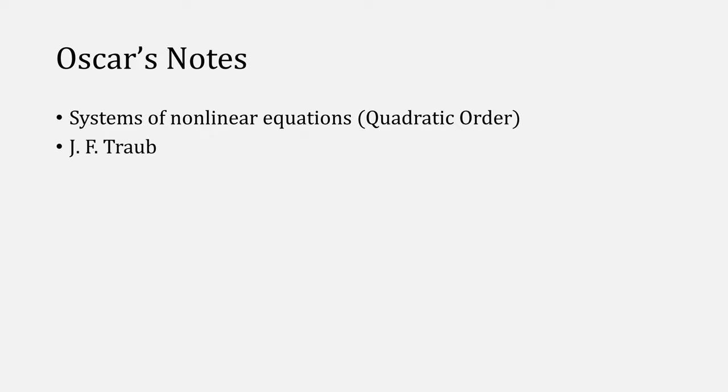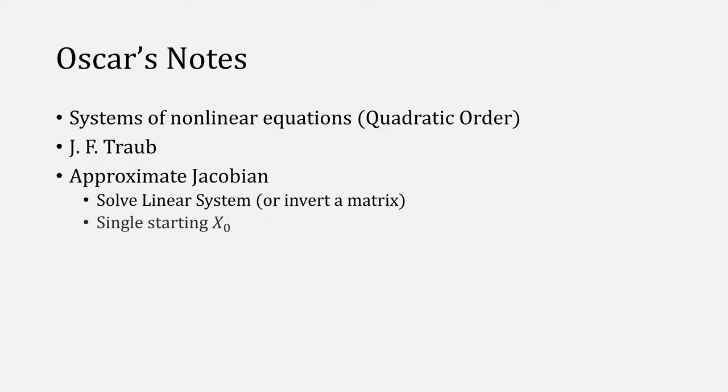Historically, it was found by J.F. Traub, and it approximates the Jacobian using that equation. It also solves a linear system or inverts a matrix the same way that Newton's method does, and it has a single starting value for X, compared to the generalized secant method, which had multiple values.